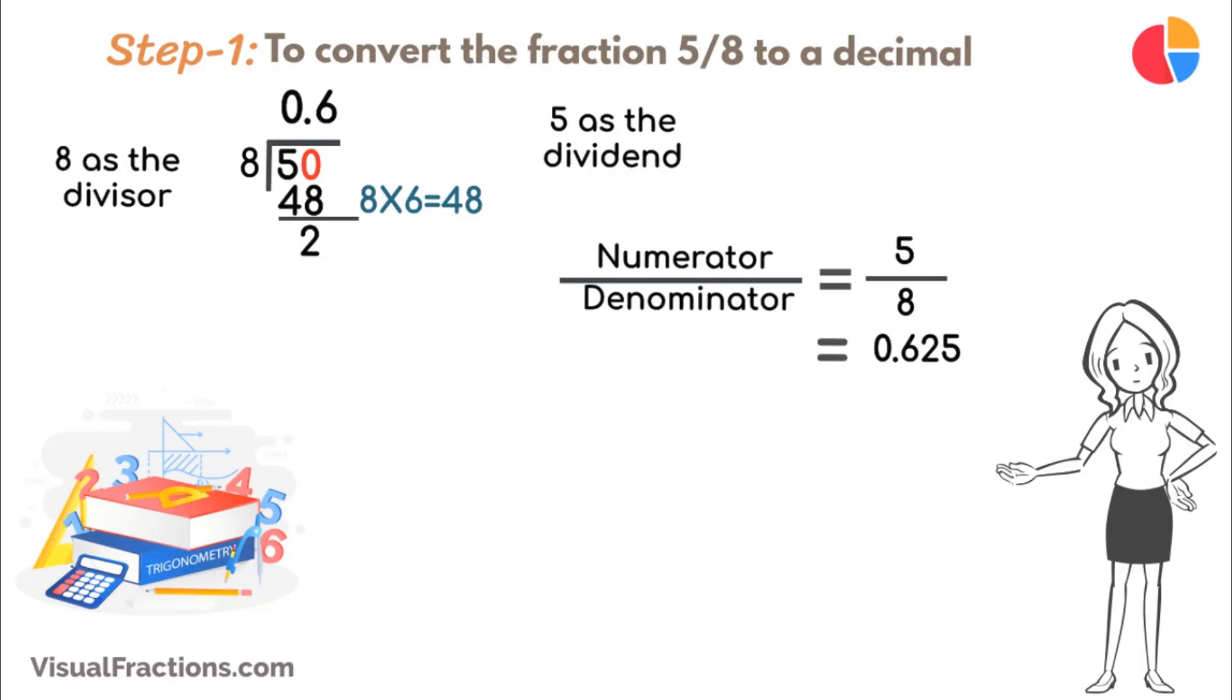Next, bring down another 0 to make it 20. 8 goes into 2, 2 times, updating the quotient to 0.62. Multiply 8 by 2 to get 16, and subtract this from 20, leaving a remainder of 4.